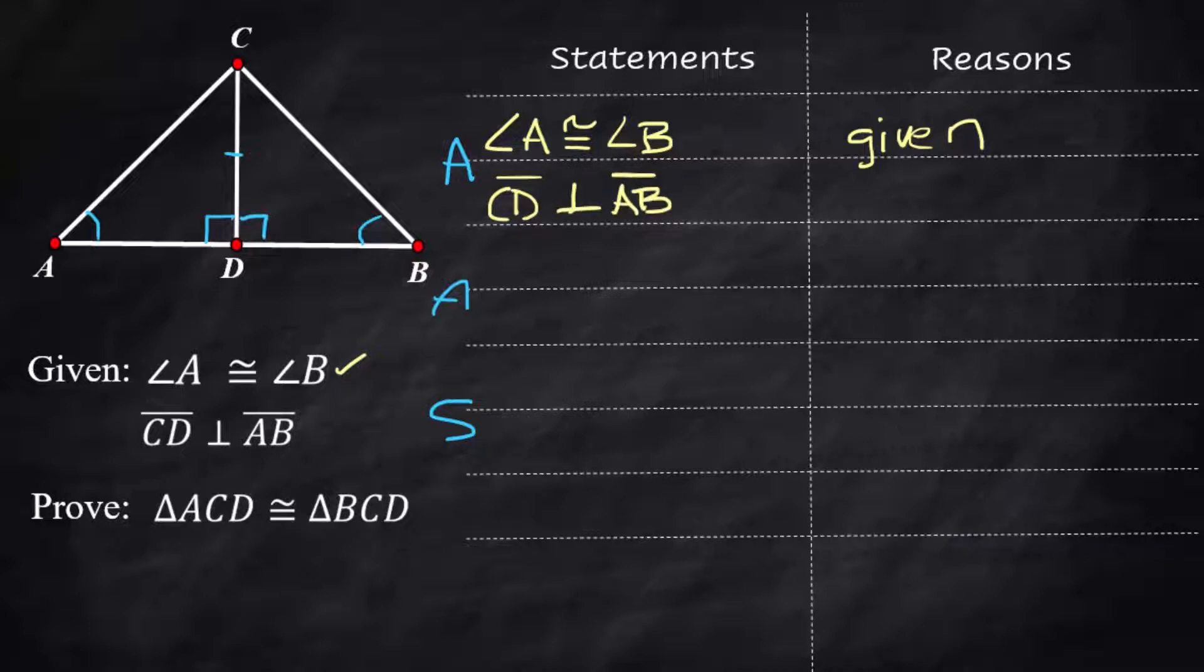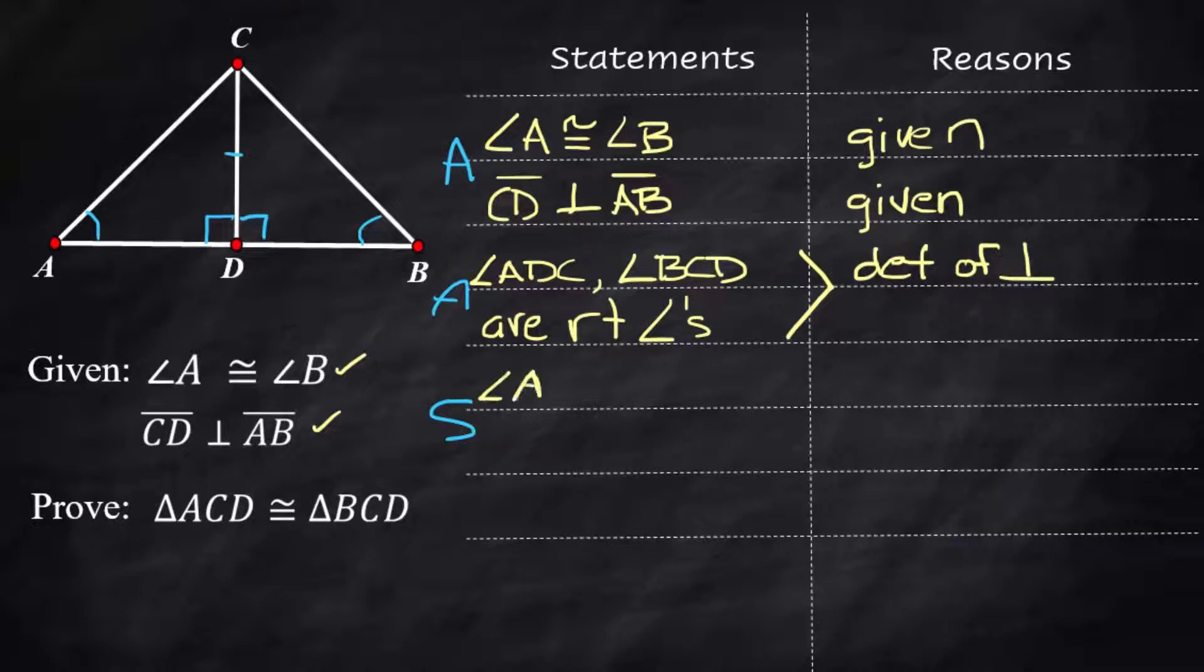Angle ACD and angle BCD are both right angles. That's the definition of perpendicular, so that builds from the line before. Now the next line is to say that angle ADC is congruent to angle BCD, and that's because all right angles are congruent. That's because all right angles are 90 degrees.